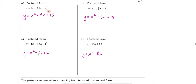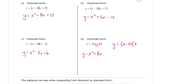Look carefully at the relationships: between 3 and 5, and 8 and 15; between 2 and 7, negative 2 and positive 7, and 5 and negative 14; between negative 6 and negative 1, and negative 7 and 6; and 8 and 8. This factored form can be thought of as y equals x minus 0 times x plus 8, because x minus 0 is just x.